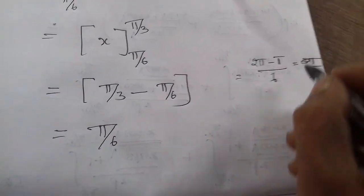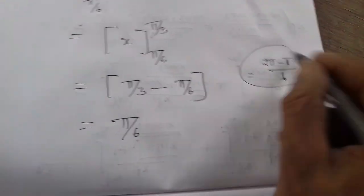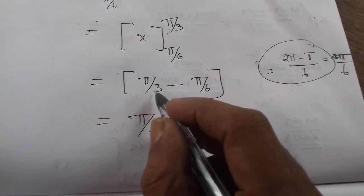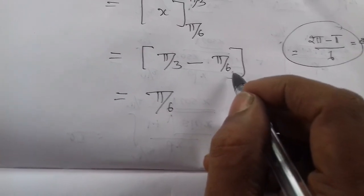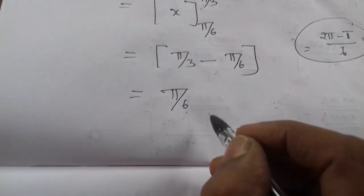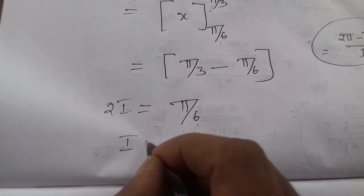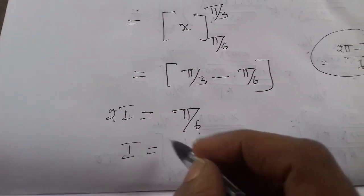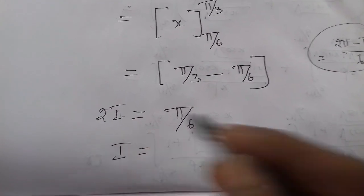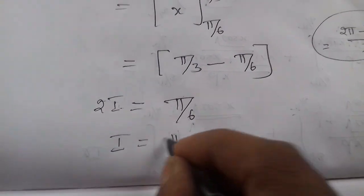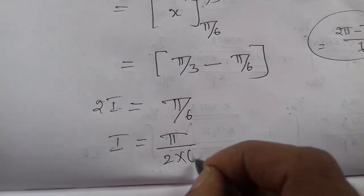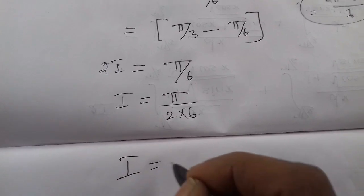π/6. You know directly, π/3 is 60, π/6 is 30. 60 minus 30 equals 30 degrees, okay. So, integral function, you know directly - π/2 into 6. So answer I equals π/6.